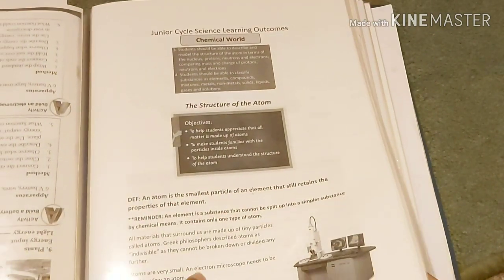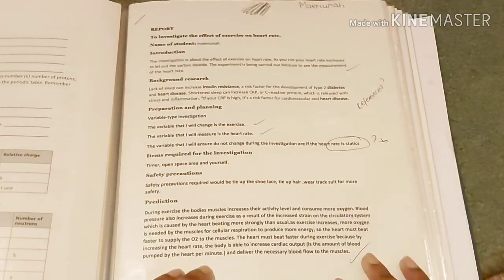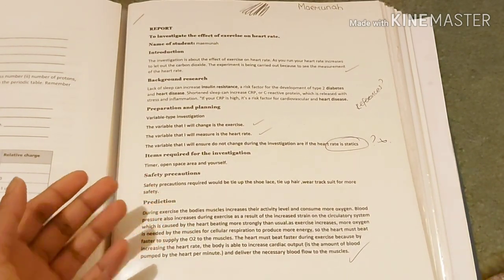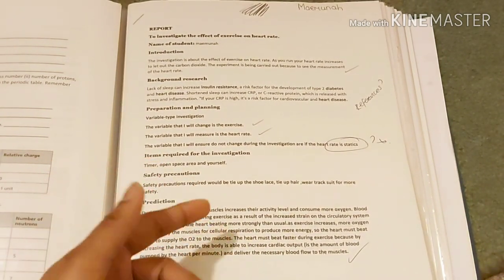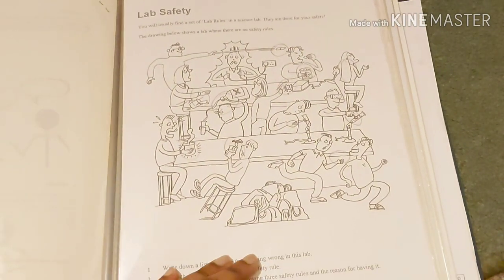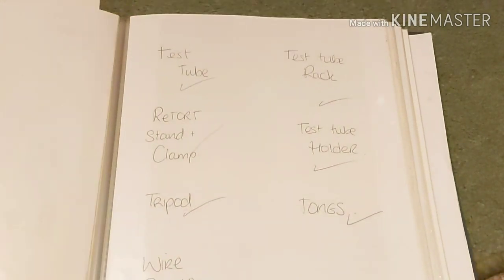I'm just going to have a quick glance. Atomic structure - that was my other report, how to investigate the effect of exercise on heart rate. This is a sheet that I got from first year.